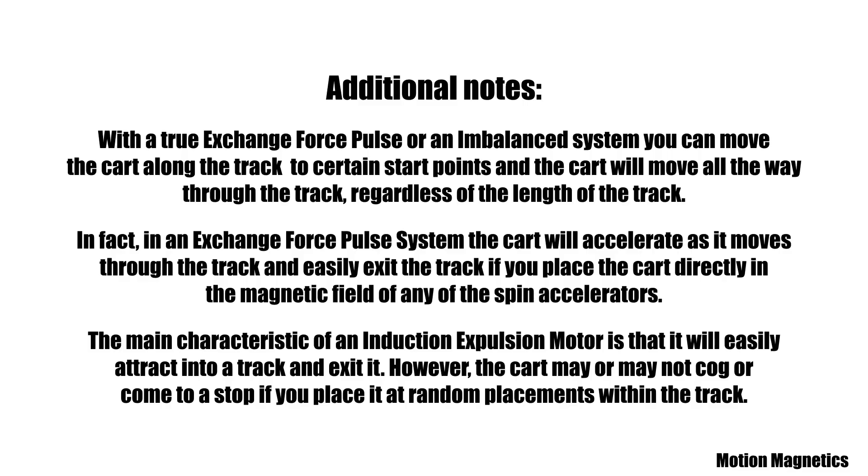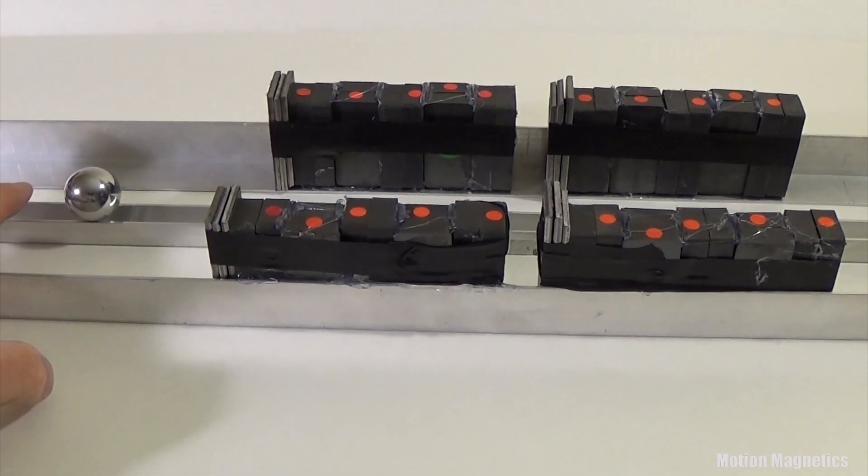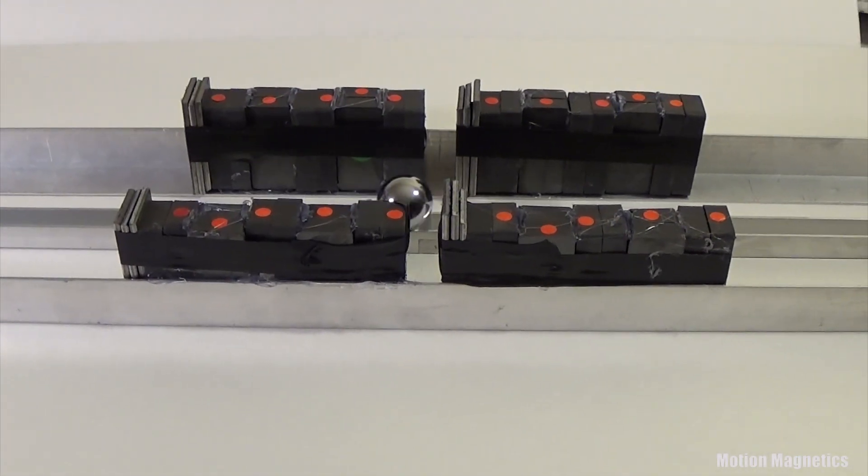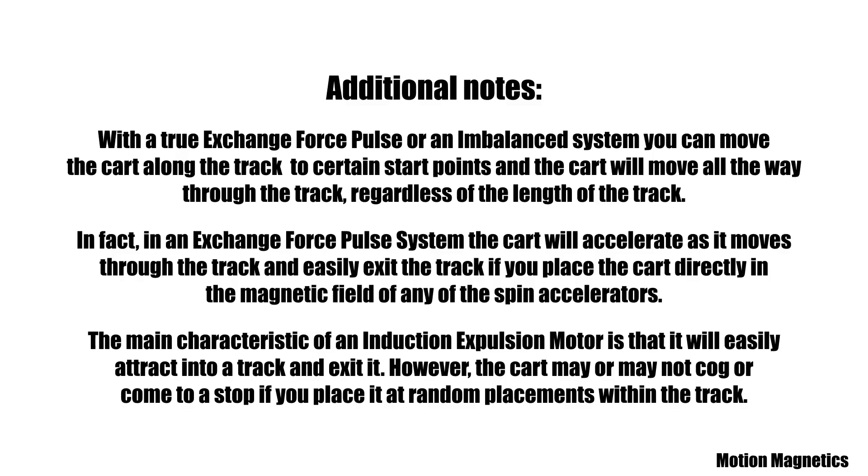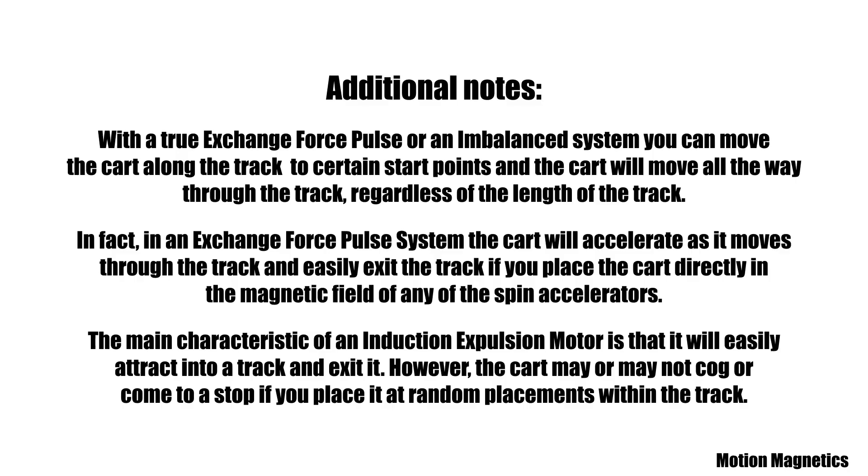The main characteristic of an induction expulsion motor is that it will easily attract into the track and exit it. However, the cart may or may not cog or come to a stop if you place it at random placements within the track.